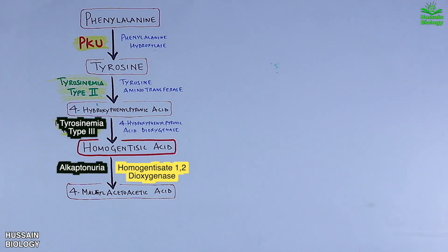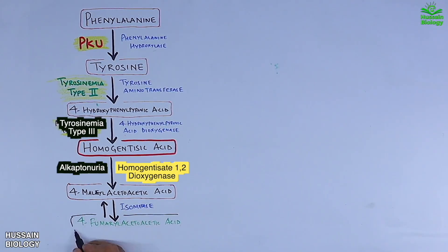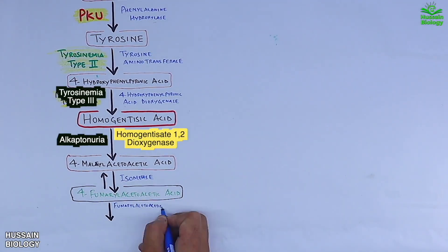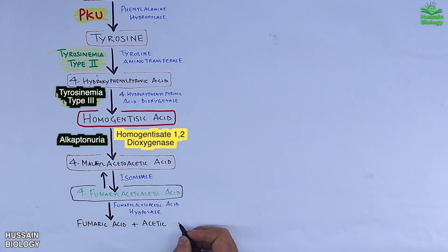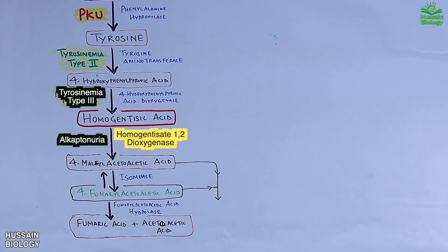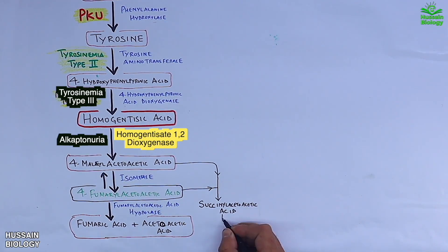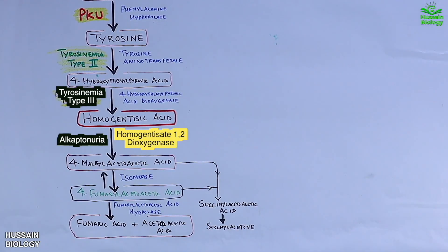If all enzymes are working properly, 4-maleylacetoacetic acid is converted to 4-fumarylacetoacetic acid by isomerase enzyme. This is then further converted to fumaric acid and acetoacetic acid by hydrolase enzyme. We also see a branch of the pathway where 4-maleylacetoacetic acid and 4-fumarylacetoacetic acid give succinylacetoacetic acid.